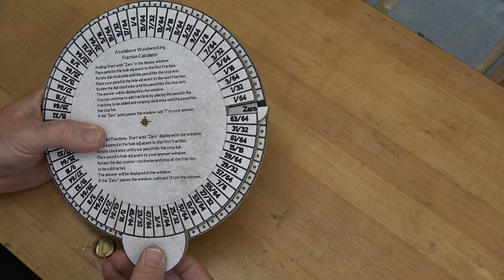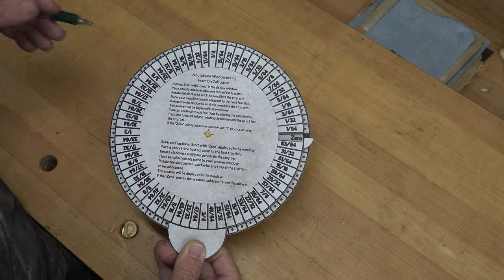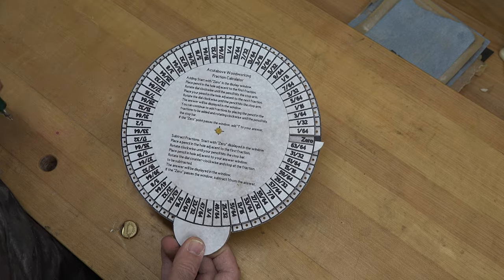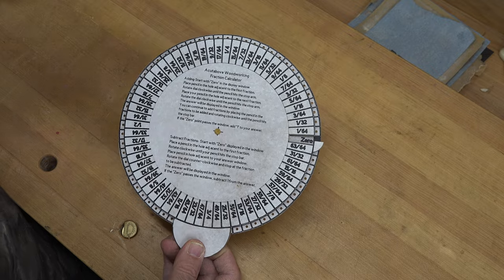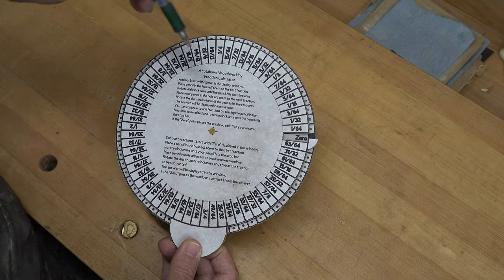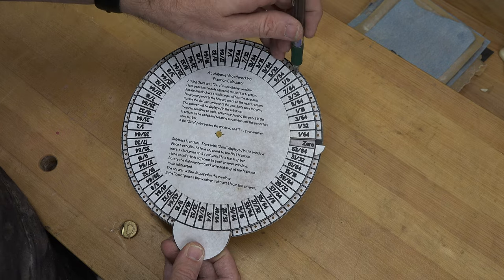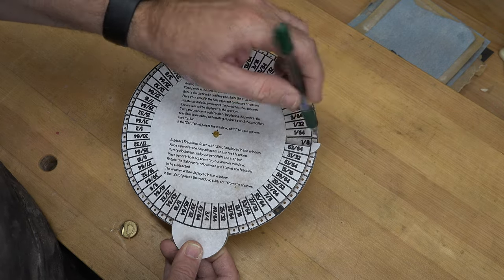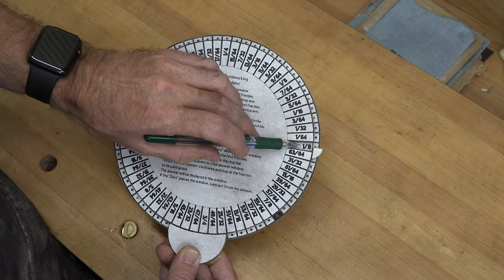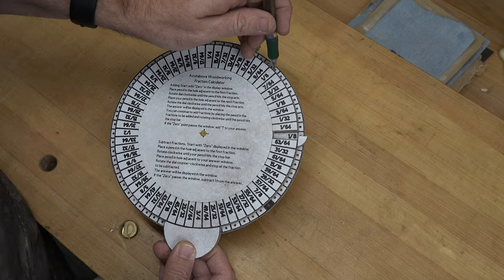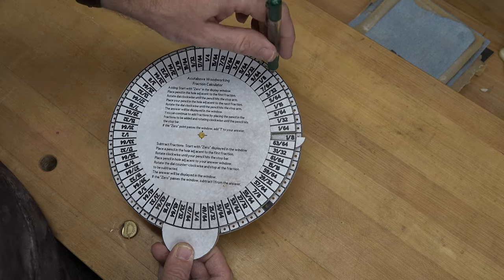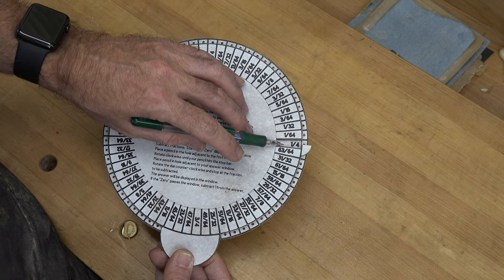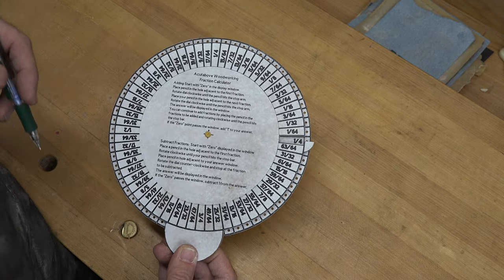From there it is as simple as choosing what fractions you want to add. So we'll just do some easy addition just to show you how it works. Let's add 1/8th and 1/8th. Now we all know that 1/8th and 1/8th is 1/4. We don't need a calculator for that. But if you did need one, all you do is take your pencil, put it in the hole that's adjacent to the 1/8th mark and turn it clockwise until your pencil hits the stop that we cut. And that will give you 1/8th of an inch. You want to add another 1/8th. You put your pencil in the hole that's adjacent to the 1/8th and spin it clockwise until you hit the stop. And you can see there we have 1/4. So 1/8th plus 1/8th is 1/4.